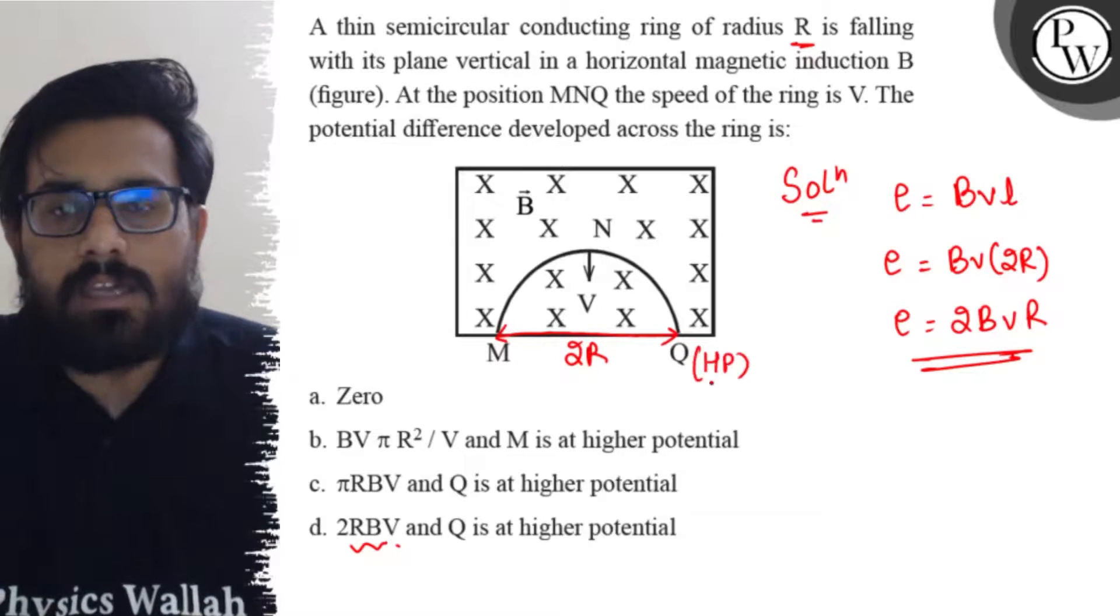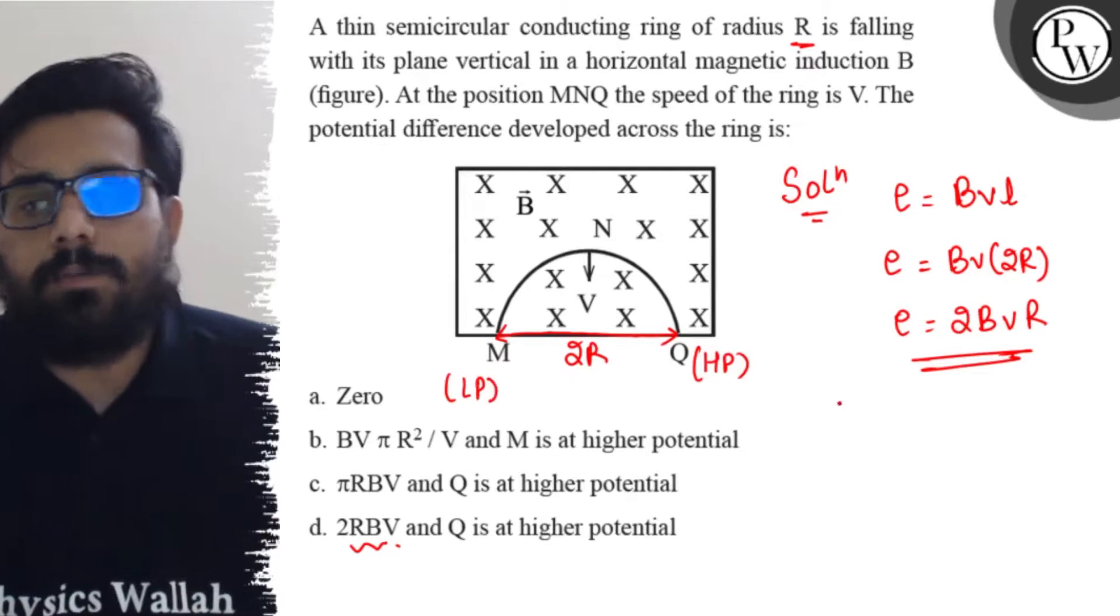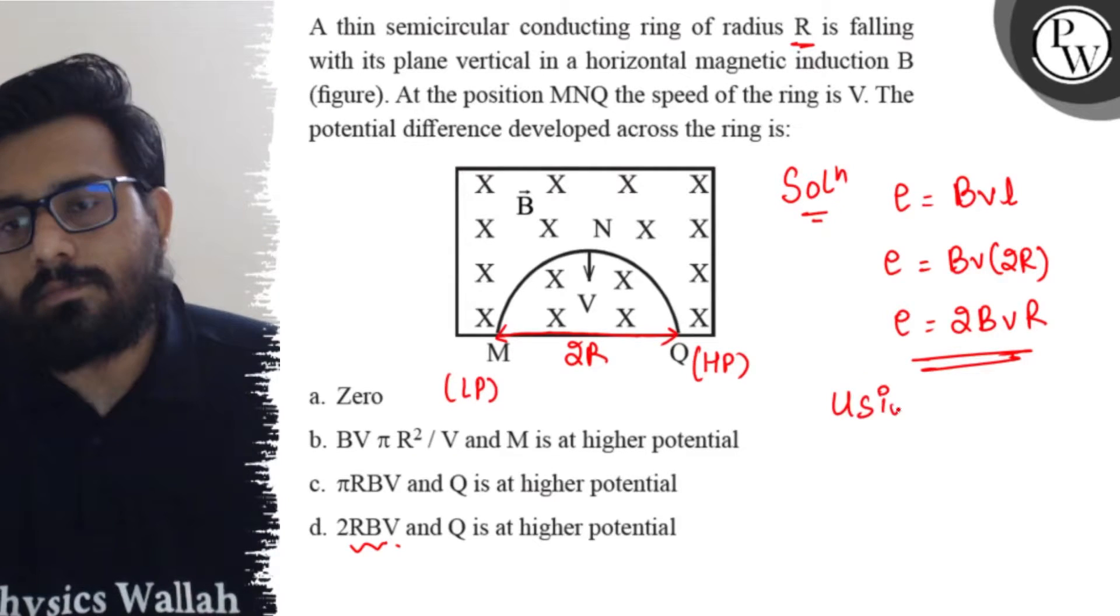So here Q will be at higher potential and M will be at lower potential as per the left hand palm rule.